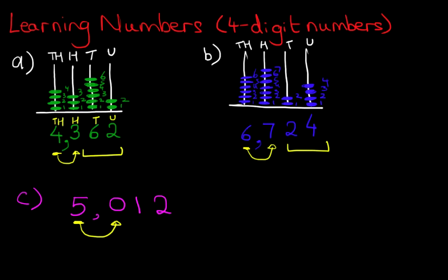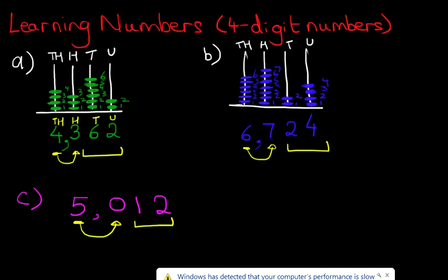But there are zero hundreds. So, we don't say anything there. We move across. And what is left is twelve. Now, what we say is, five thousand and twelve. So, we've kept the bit on the right exactly the same. We say, and twelve. But because there are zero hundreds, we don't say anything. For example, we do not say, five thousand, zero hundreds and twelve. What we say is, five thousand and twelve.